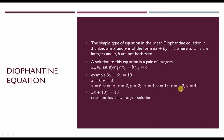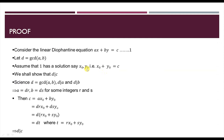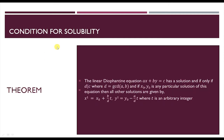So what is the condition for solubility? Given an equation, how do we find out whether it has a solution or not — we can't always use trial and error. There is a condition: if we have the linear Diophantine equation ax plus by equal to c, then that equation will have a solution if and only if d, the GCD of a and b, divides c.